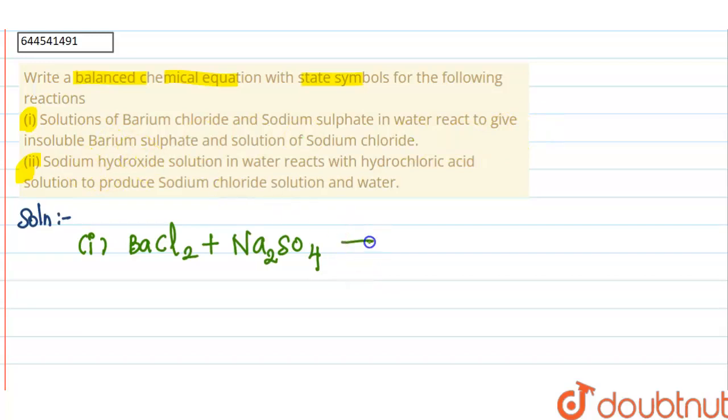produce insoluble barium sulfate, so barium sulfate is BaSO4, plus the solution of sodium chloride, so it will be written as 2NaCl. This is the balanced chemical equation of part one. Then the second reaction.